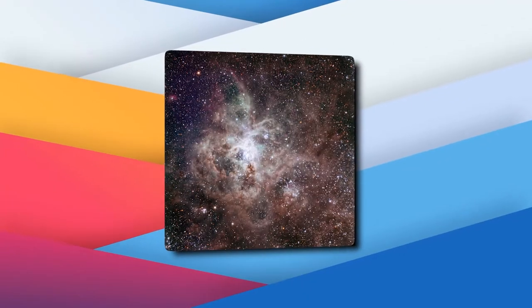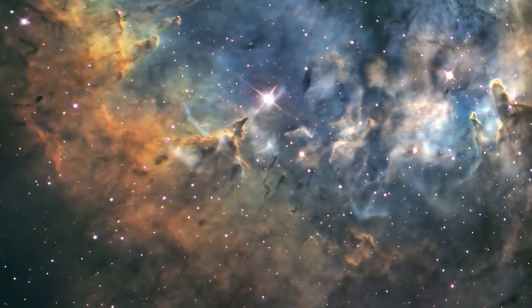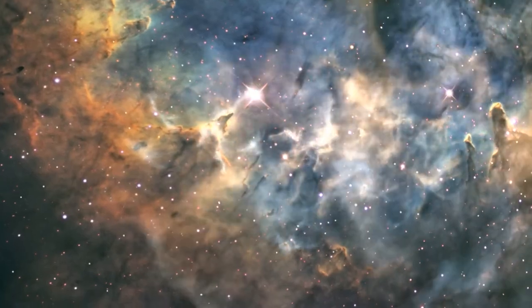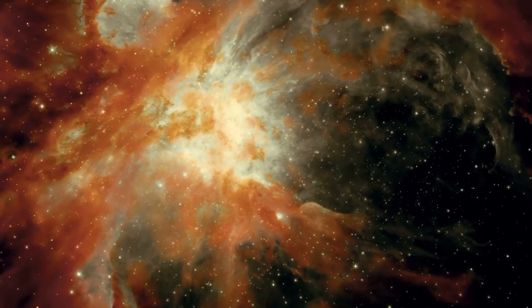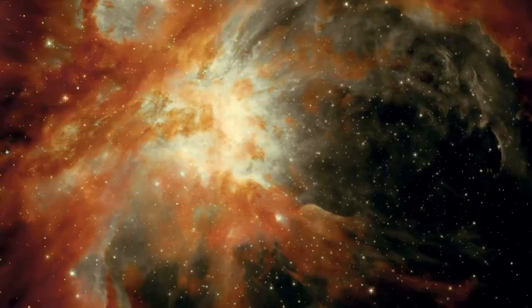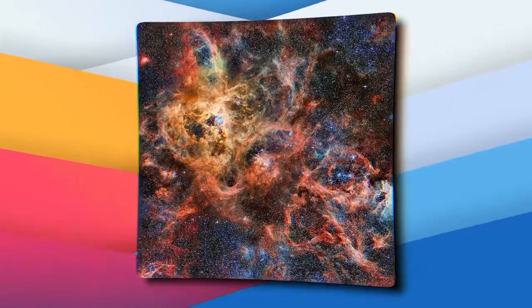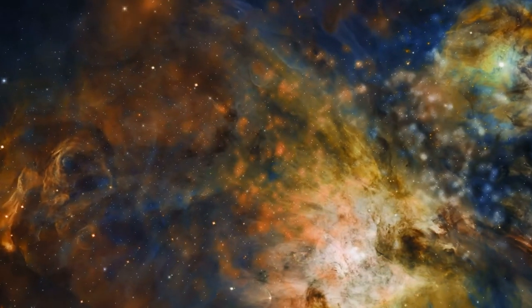The Tarantula Nebula, also known as 30 Doradus, is in the Large Magellanic Cloud Galaxy, which is only 161,000 light years from Earth and is part of the group of galaxies closest to the Milky Way. It is also called the Spider Nebula. When pictures of the nebula were taken in the past, it looked like long clouds of dust and gas were coming out of the center like a spider's web.